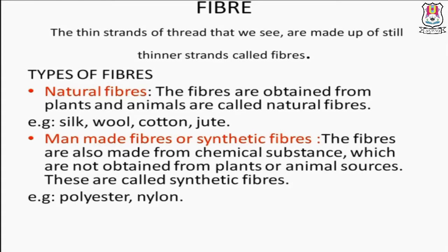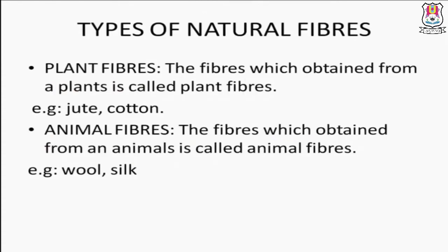Natural fibers has also two types: first is plant fibers and second is animal fibers. Plant fibers: the fibers which are obtained from a plant are called plant fibers — example: jute and cotton. Animal fibers: the fibers which are obtained from an animal are called animal fibers — example: wool and silk.